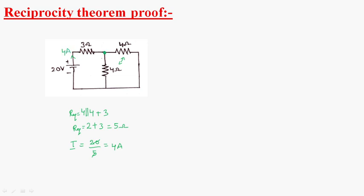At this point the current division will take place, as the values of resistance are the same. So 2 amperes will flow through one branch and 2 amperes will flow through the other. Now what we will do is we will connect the voltage source at this point and observe the response of the network.